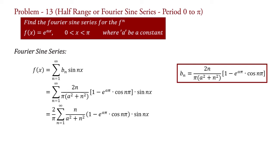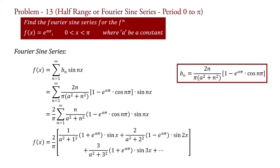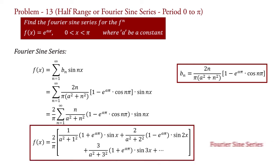By expanding, taking n = 1, 2, 3, 4 and so on, we get f(x) = (2/π) · { 1/(a²+1) · [1 + e^(aπ)] sin(x) + 2/(a²+4) · [1 − e^(aπ)] sin(2x) + 3/(a²+9) · [1 + e^(aπ)] sin(3x) + ... }. This is the Fourier series of the given function.